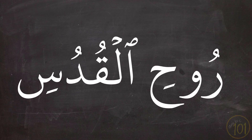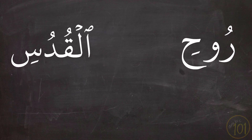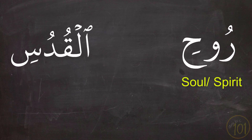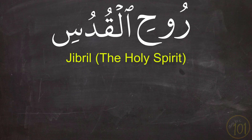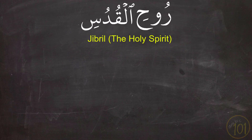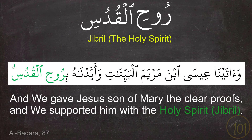The next combination is رُوحُ الْقُدُسِ, made up of رُوحُ, meaning 'soul or spirit,' and الْقُدُسِ, meaning 'holy.' This combination refers to the angel Jibreel, or if literally translated, 'the Holy Spirit.' We see it used in the example: وَآتَيْنَا عِيسَى ابْنَ مَرْيَمَ الْبَيِّنَاتِ وَأَيَّدْنَاهُ بِرُوحِ الْقُدُسِ.